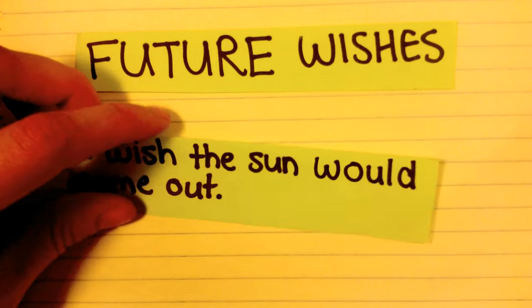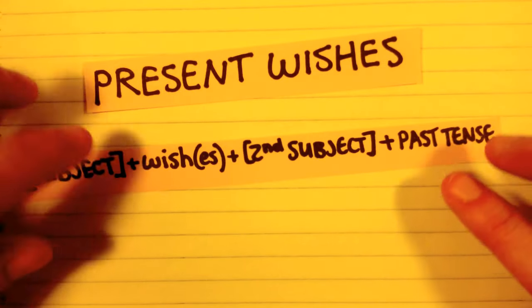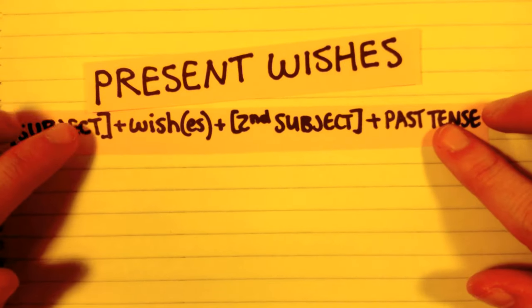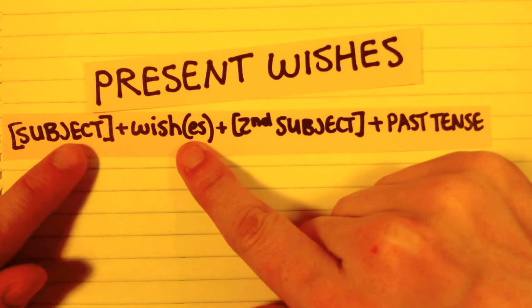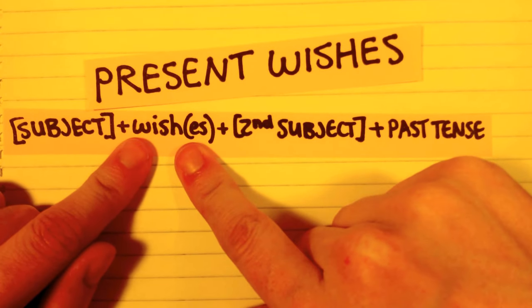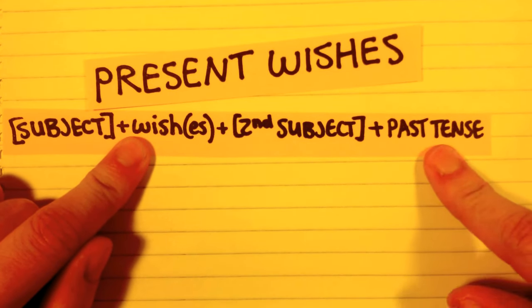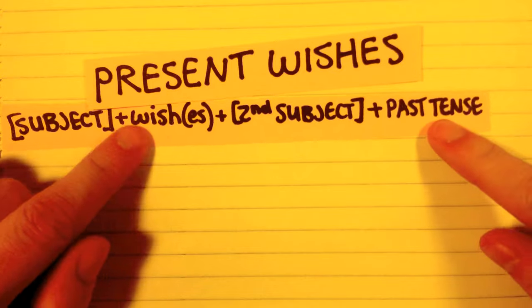So that's future wishes. What about things we wish were happening right now? Well, those are present wishes. The way we talk about present wishes is to say: subject plus the correct form of the verb 'to wish,' plus the second subject, and then we add a verb in the past tense.